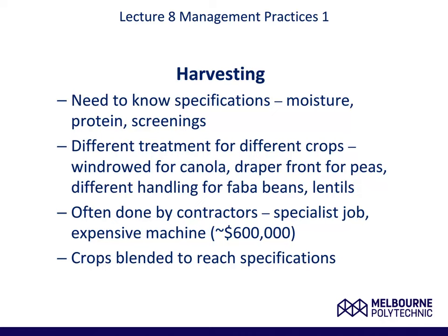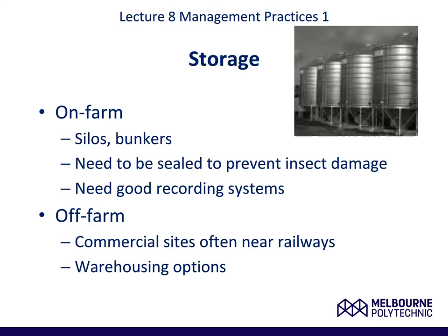After harvest you then have to consider storage. This can take two forms: you can store on your farm or you can store off the farm. Storage on the farm usually involves silos or bunkers — they need to be cleaned and sealed to prevent insect damage. You need to have good recording systems in place for your storage records. Off-farm storage involves commercial sites which are often placed near railways. There are also warehousing options, but these may come at an extra expense.